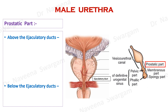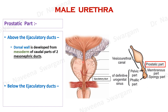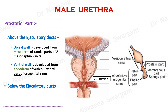The point to be understood here is: after forming the mucous membrane of internal trigone of urinary bladder, the mesodermal cells from the caudal portions of mesonephric ducts proliferate and form the dorsal wall of prostatic urethra above the ejaculatory ducts. Whereas its ventral wall develops from endoderm of vesico-urethral part of urogenital sinus. The part below the ejaculatory ducts develops from endoderm of pelvic part of urogenital sinus.